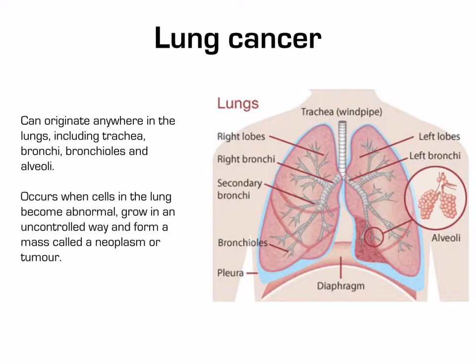Lung cancer can originate anywhere in the lungs, including the trachea, bronchi, bronchioles and alveoli. It occurs when cells in the lung become abnormal and grow in an uncontrolled way, forming a mass called a neoplasm or tumour.